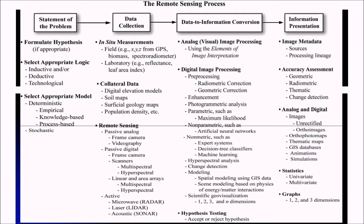This is the remote sensing process. The statement of the problem, that means why we want to collect the data. Data collection can be in these forms. Then we convert the data into the information because data is raw. Information is the content which you want from the data. And then we present the information.